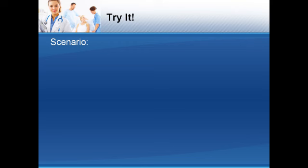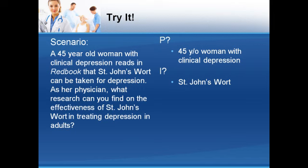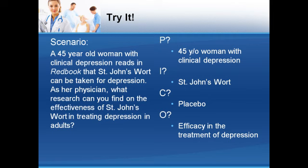Let's try one for practice. Consider the following scenario: a 45-year-old woman with clinical depression reads in Redbook that St. John's wort can be taken for depression. As her physician, what research can you find on the effectiveness of St. John's wort in treating depression in adults? Using PICO, let's identify the important concepts. First, who is the patient? The patient is a 45-year-old woman with clinical depression. What intervention are you considering? St. John's wort. What is the comparison treatment? A placebo. What is the desired outcome? Efficacy in treatment of depression. Finally, what kind of clinical question is this? It is a therapy question.